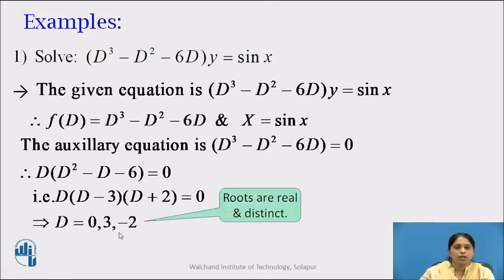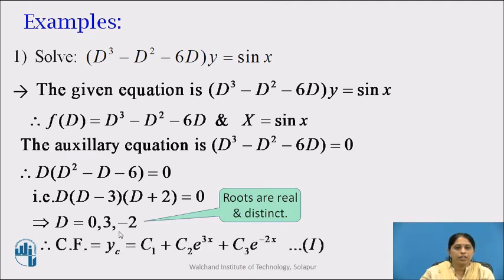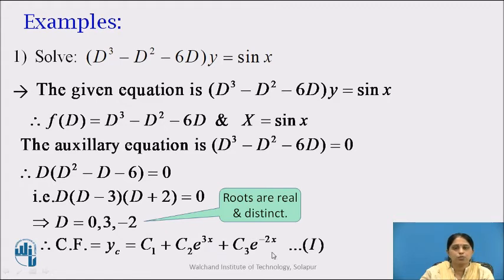The roots are real and distinct. Therefore the complementary function is yc = c₁e^(0x) + c₂e^(3x) + c₃e^(−2x). Since e^(0x) = 1, we write yc = c₁ + c₂e^(3x) + c₃e^(−2x). Call this equation (1).